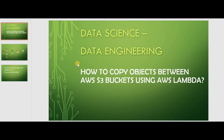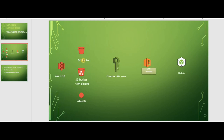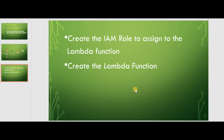Today we'll be looking at a small part of the data engineering role within data science, which is how to copy objects between S3 buckets using a Lambda function. Some of the services we'll be using are S3, IAM role — we'll be creating an IAM role — and then using Node.js to create a Lambda function. First thing we'll do is create an IAM role, then apply a policy to that role, and then create the Lambda function.